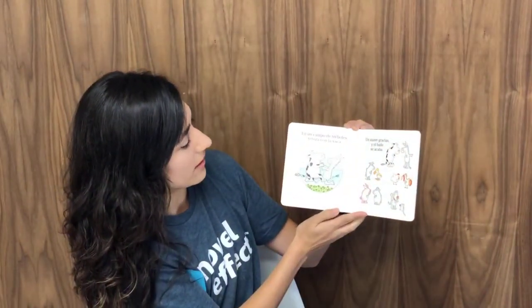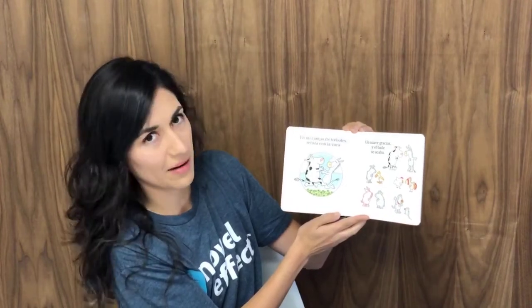En un campo de tréboles, retoza con la vaca. Un suave gracias y el baile se acaba.